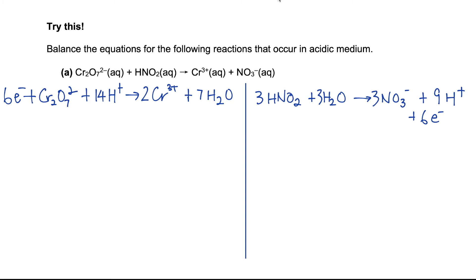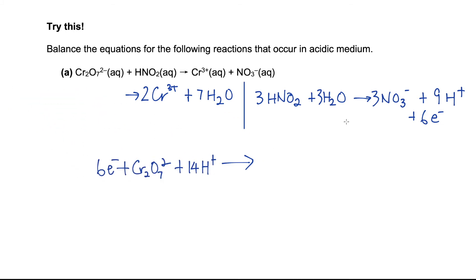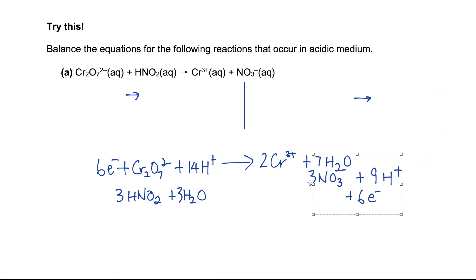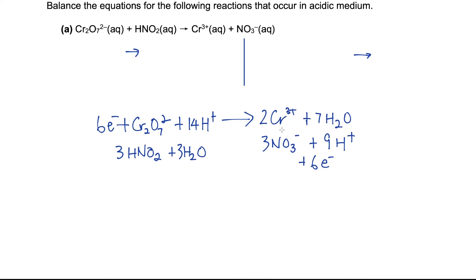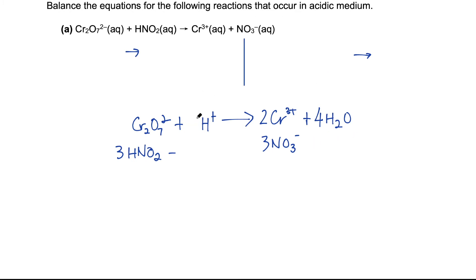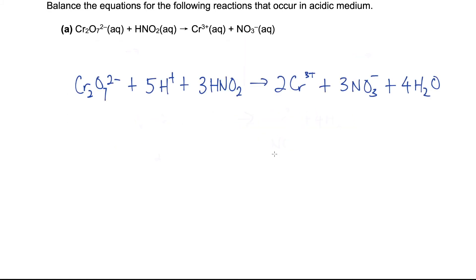Now we can put the equations together — everything on the left goes on the left, everything on the right goes on the right. We cancel the electrons, then cancel common water molecules — 3 water on this side leaves 4. We also cancel the H⁺. Then we rewrite it neatly to get the final balanced equation.